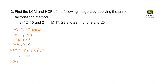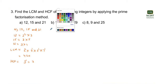For the HCF, it is the product of the common prime factors involved in the three numbers 12, 15, and 21. The common prime factor in all three numbers is 3 only, raised to its minimum power. The minimum power in this case is 1, so the HCF comes out to be equal to 3.